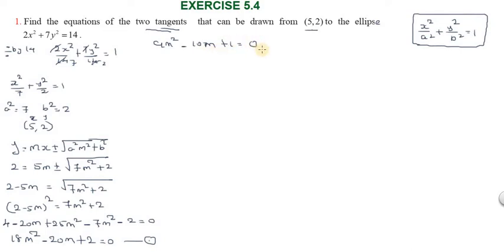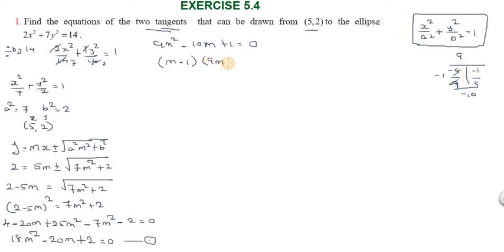Now we factorize. Product is 9, sum is -10. The factors are -9 and -1. So: (m - 1)(9m - 1) = 0, giving m = 1 or 9m = 1, so m = 1/9.